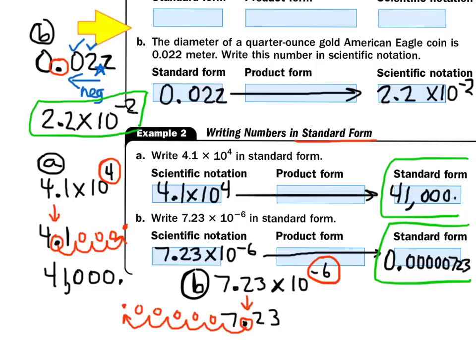Now look at 7.23 times 10 to the negative 6th power. Write the number they gave us, then let the front number 7.23 drop straight down. With your red, circle the exponent — the negative 6. That tells you to move the decimal 6 places in the negative direction. Grab the decimal point and count 1, 2, 3, 4, 5, 6 places, then put the decimal there. Fill the empty swings with zeros, giving you 0.0000723.